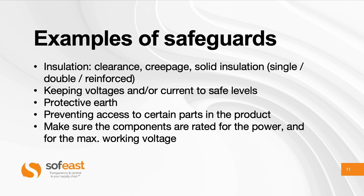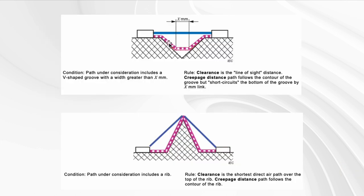So what kinds of safeguards are typically used? Of course, insulation — and clearance and creepage. For a groove or rib like this, it makes the difference obvious. The blue one is the clearance, which is the air gap between two poles — for example, high and low — separated by air. The clearance is calculated as the shortest direct air path.